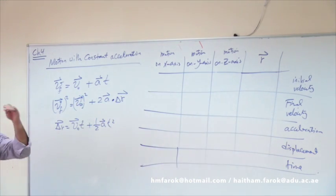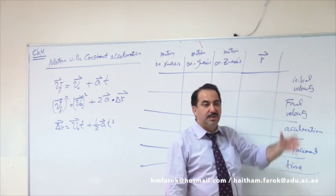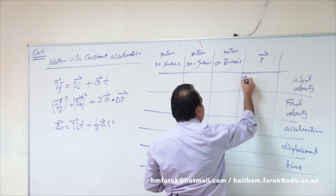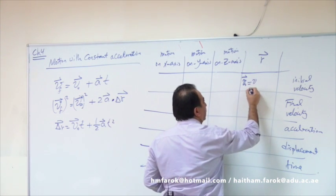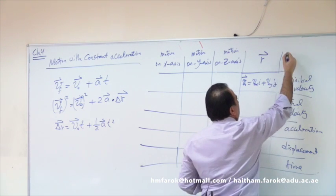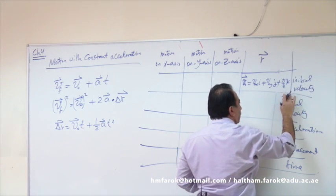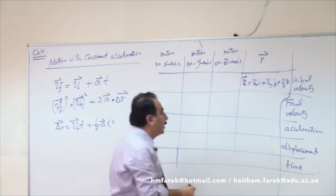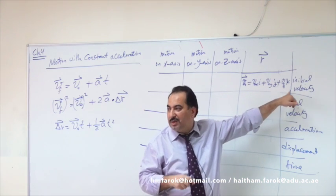When you're in the r column and talking about initial velocity, it means V₀ vector. Because it's a vector, it has components: V₀ vector equals V₀x î plus V₀y ĵ plus V₀z k̂. This means the initial velocity has three components — initial velocity in x, initial velocity in y, and initial velocity in z.